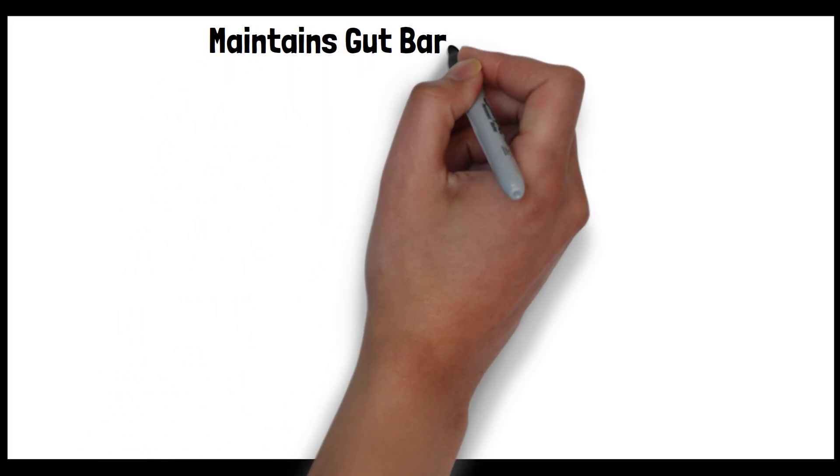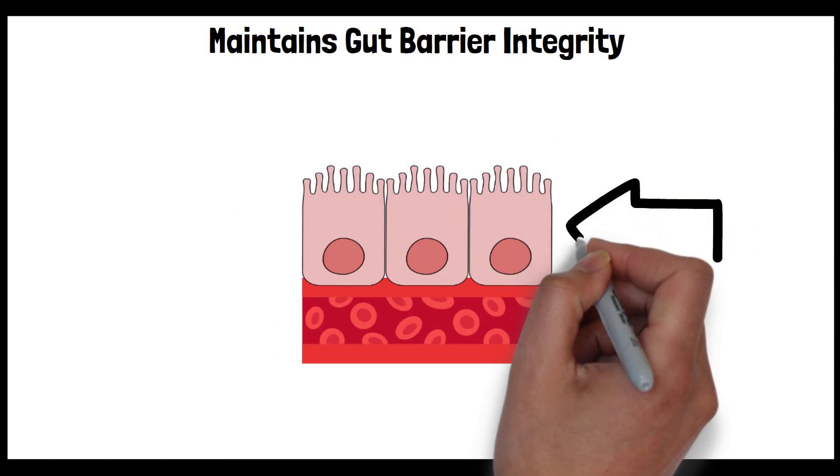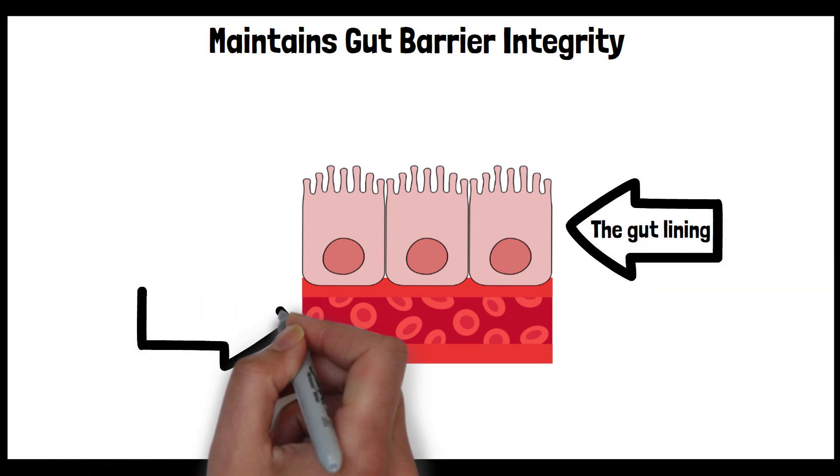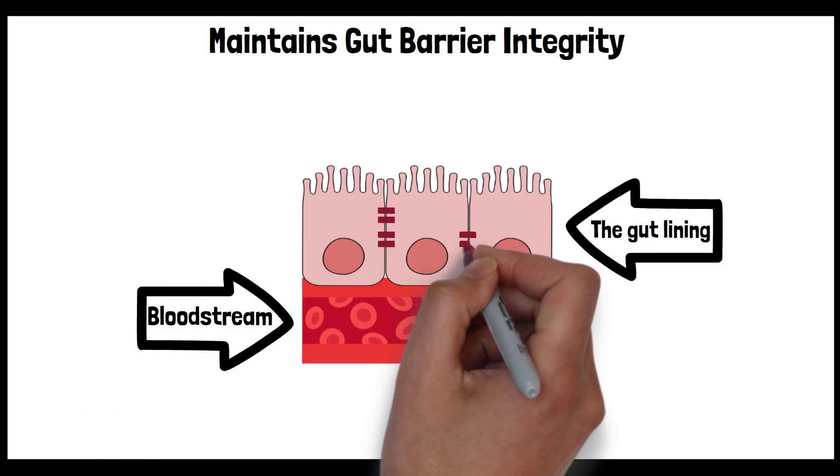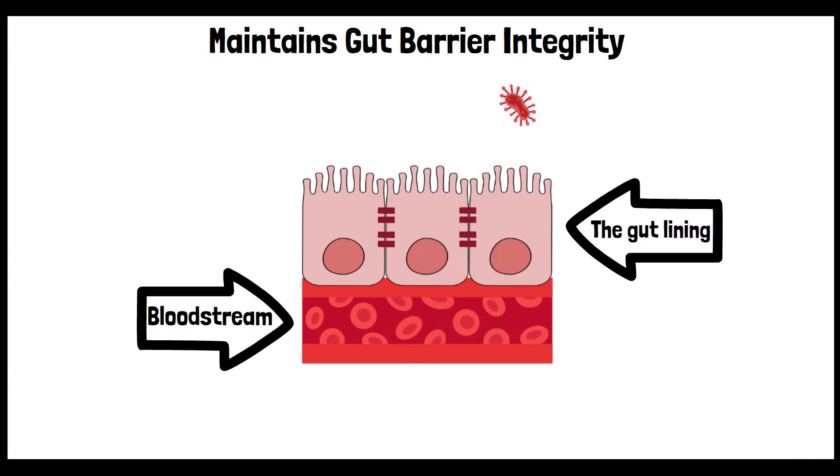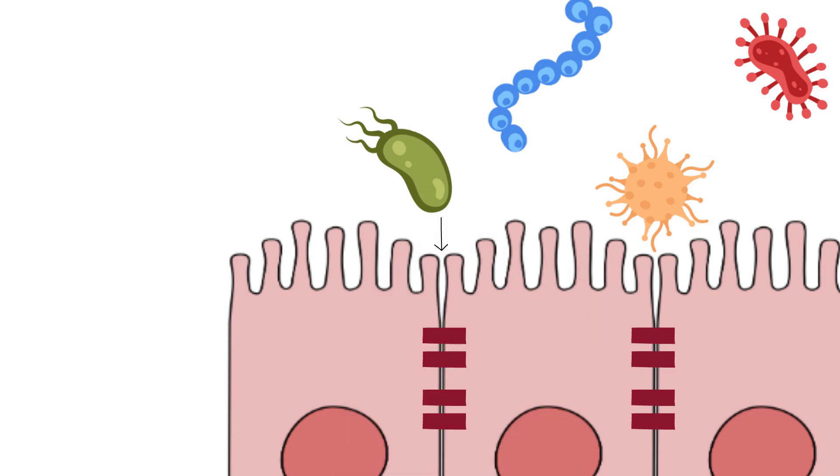Two, maintains gut barrier integrity. The gut lining is your body's first line of defense against harmful substances from the external environment. Glutamine is essential for the health and repair of this lining. It helps in maintaining the tight junctions between gut cells, ensuring that harmful substances like toxins and pathogens can't easily pass into the bloodstream.